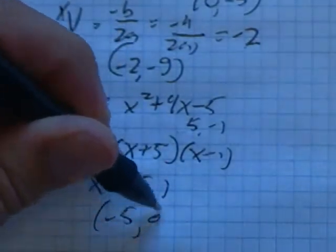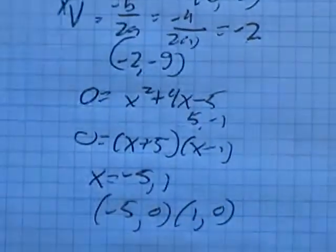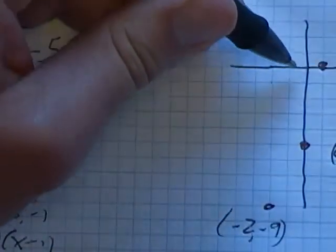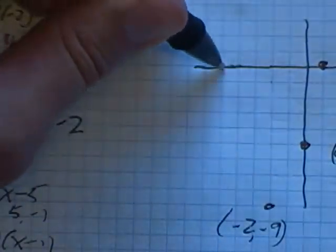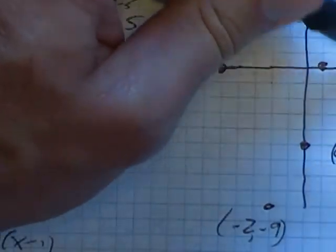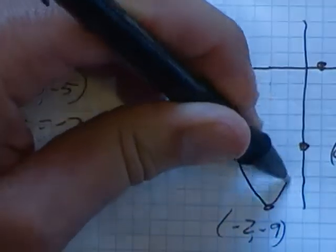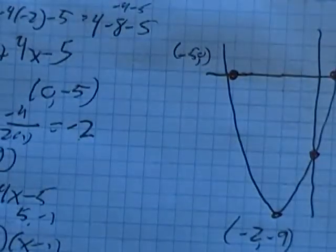So my x-intercepts are the points negative 5, 0, and 1, 0. 1, 0 is here. Negative 5, 0, 1, 2, 3, 4, 5. Label that. Label that. There she blows.